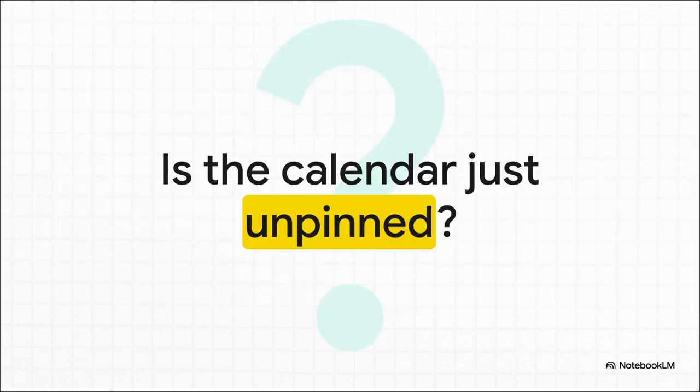But wait — before you do anything else, let's check for the easiest fix in the book. Sometimes the calendar isn't really gone at all; it just got unpinned from your sidebar. So click those three little dots on the side of your Teams window. If you see Calendar sitting in that list, just right-click it and hit Pin. Hey, it happens to the best of us.